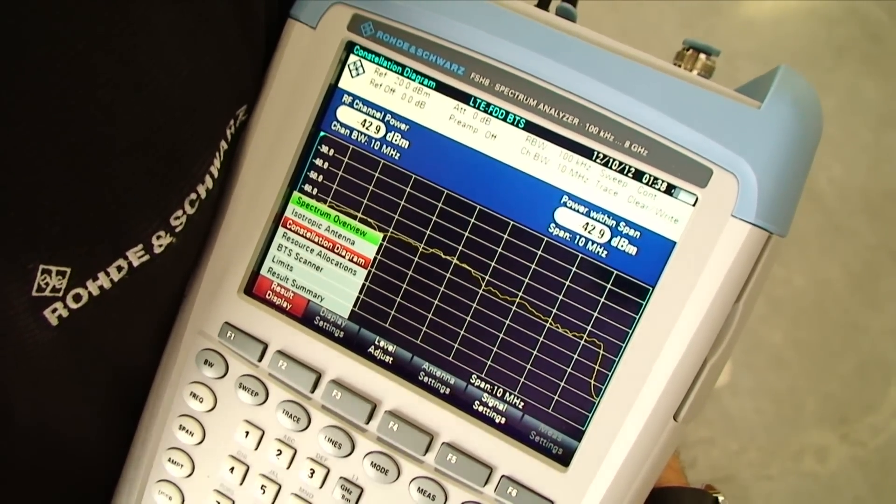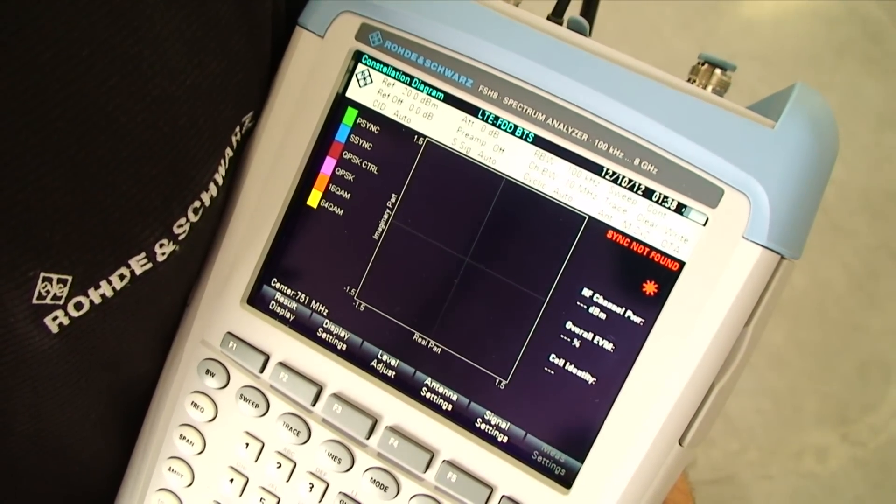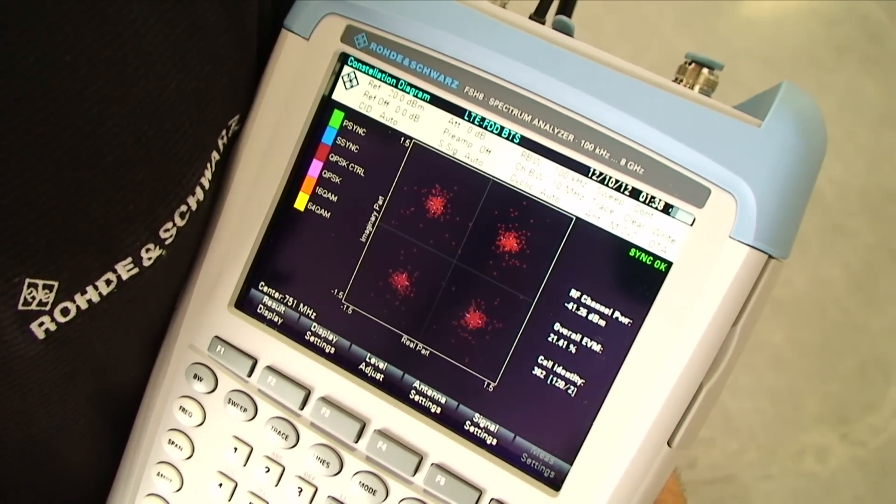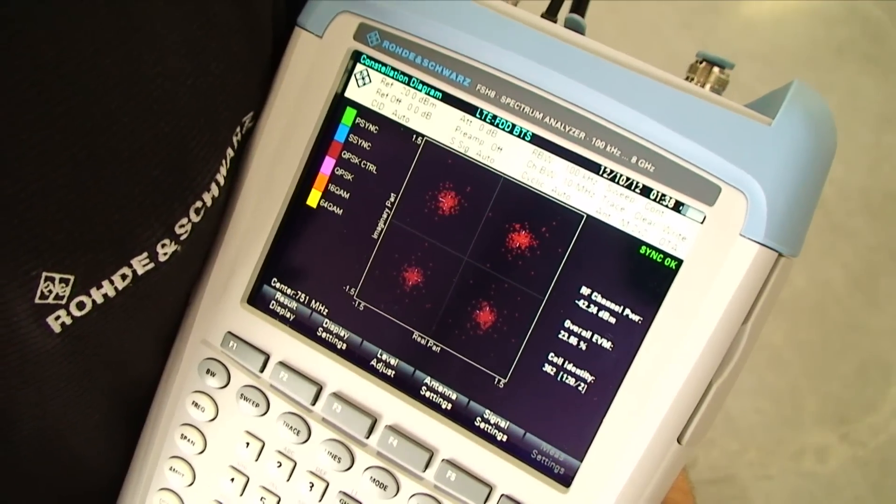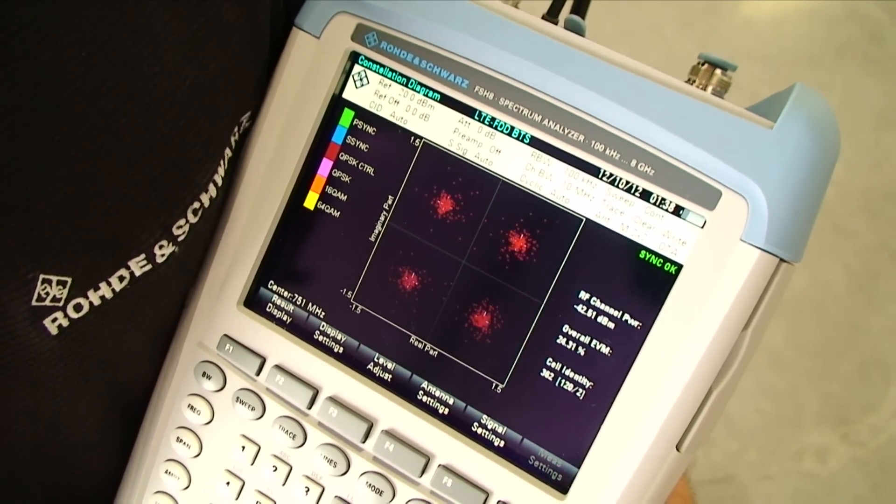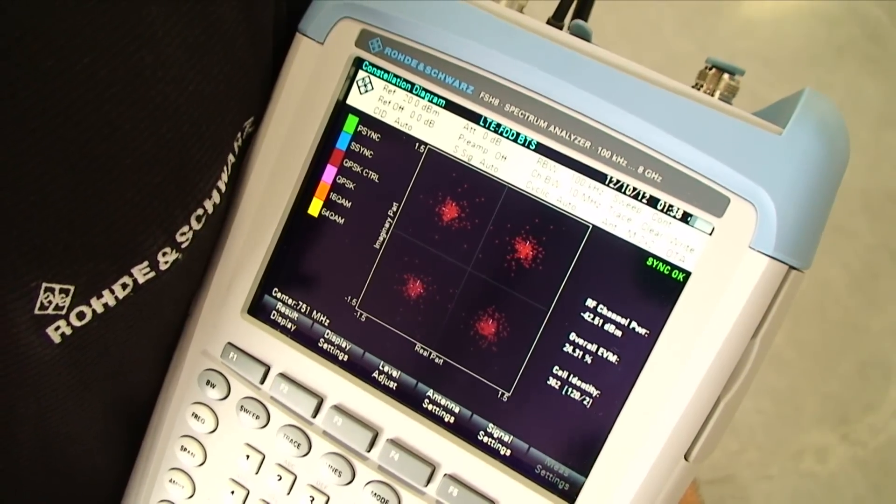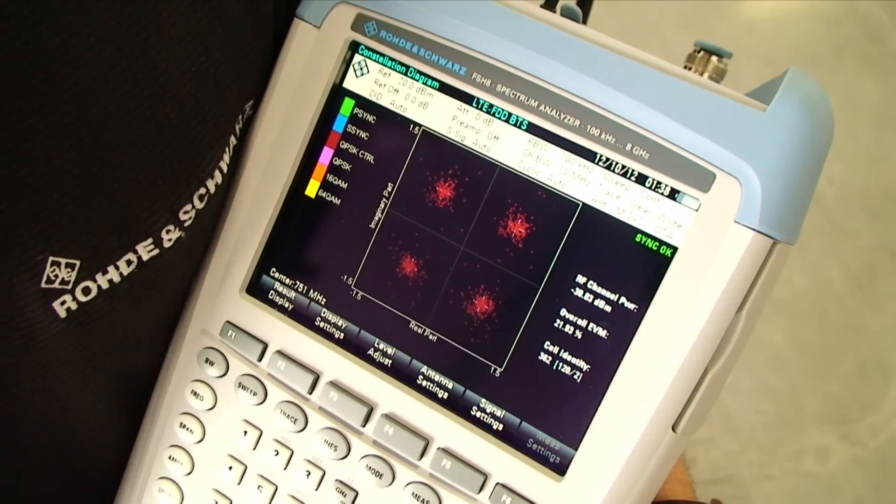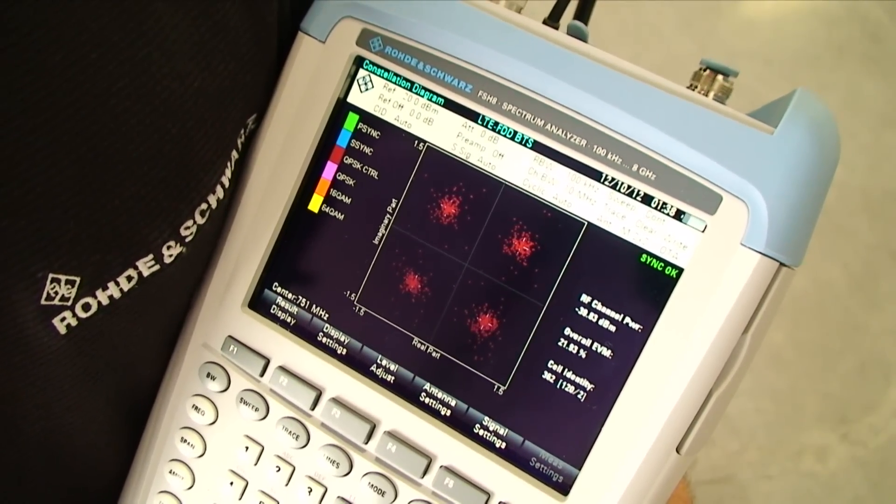I'll move to the constellation diagram display. Here what we can see is the different types of modulation that are going on over the air. As you can see on the left side of the screen, this is color coded. Looking at what we have live here, I can tell that this is QPSK. And the closer the dots are in each quadrant, I know it's a cleaner RF environment. That's what we would expect to see.